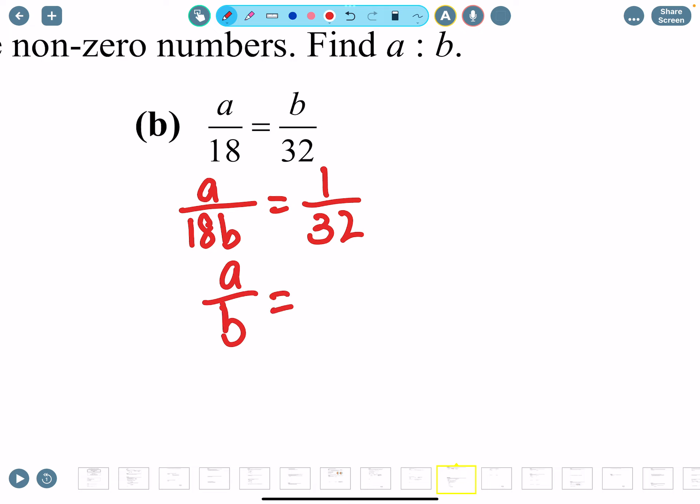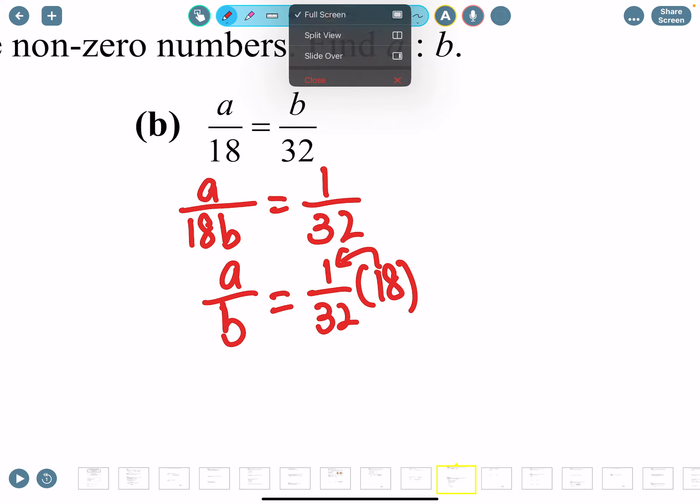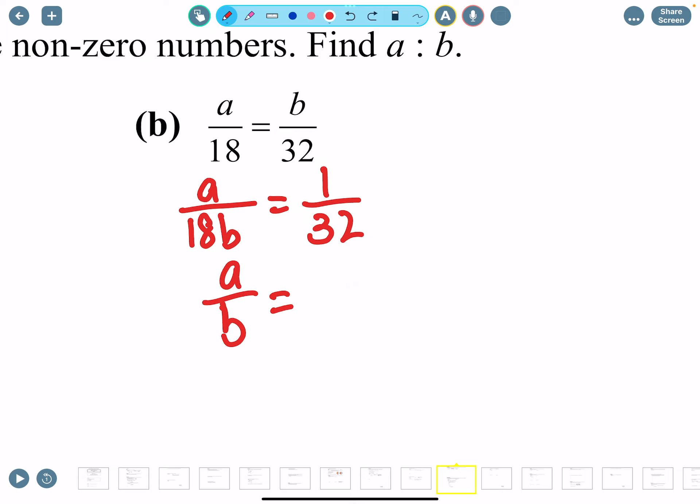18 is going to be times on the right, so it's going to be 1 over 32 times 18. When you multiply something it actually belongs to the top, it doesn't belong to the bottom. Be careful with that. The negative can go up or down because it's the same for negative, but for numbers it must go to the top. Okay, so be careful, times 18, so it's going to be 18 over 32.